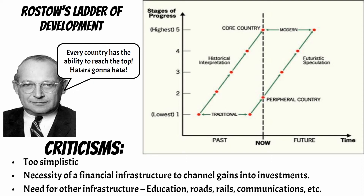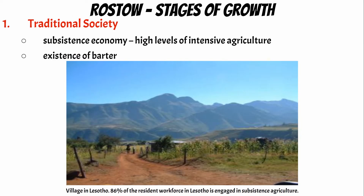Let's look at each stage, starting at the bottom and going to the top. Stage one is the traditional society — almost everyone is doing subsistence farming. We can see that in Lesotho, where 86% of residents are engaged in some sort of agricultural practice without commercial tools, fertilizers, or things like that. In stage one it's subsistence, it's low wages, and you're not going to see a ton of infrastructure — not many roads, electricity, running water, schools, or healthcare. It will not be robust.